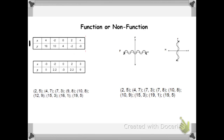In our first table, we notice x values of 4, negative 2, 0, 2, and 4. Right away we notice that we have the value x=4 twice. The first time, x=4 is paired with y=16, and the second time, the same x value, 4, is paired with y=-8. So the same x value is paired with different y values, which makes this a non-function.